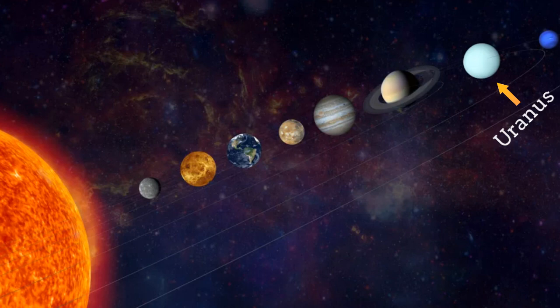Uranus has 27 moons. So Uranus is a gas planet, 7th planet from the Sun, and in between Saturn and Neptune.